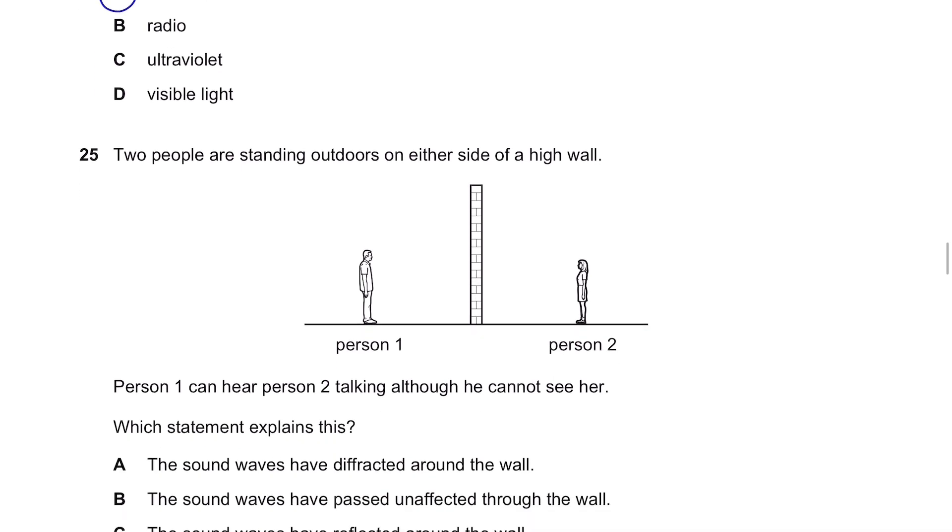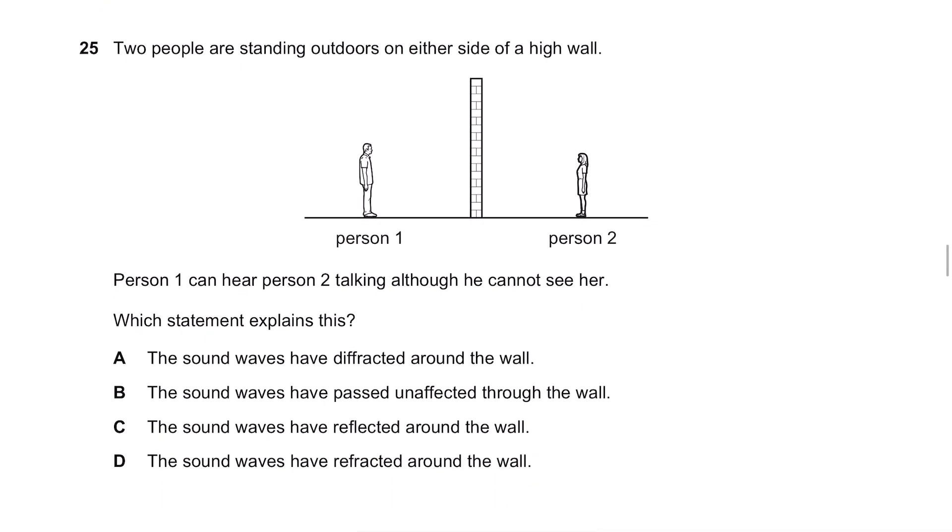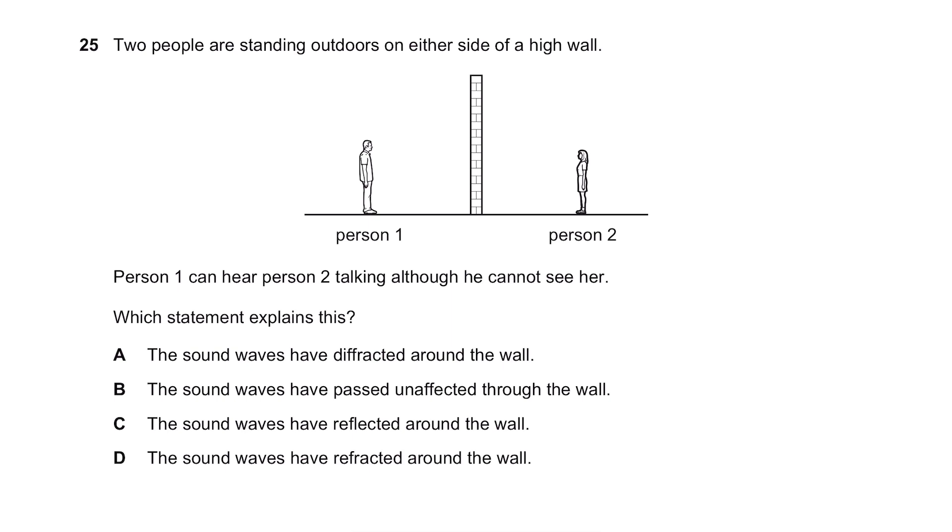Question 25. Two people are standing outdoors on either side of a high wall. Person 1 can hear person 2 talking though he cannot see her. Yeah, if this person talks, somehow person 2 can hear it. Which statement explains this? The sound waves have diffracted around the wall. Yeah, this is actually correct. So even if it hits like this, it's gonna be diffracted and somehow reach the person 2.